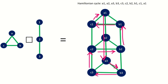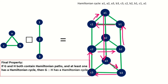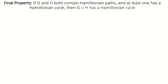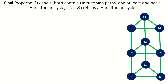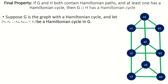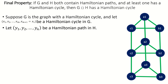This leads us to our final property: if we have two graphs with Hamiltonian paths where at least one also contains a Hamiltonian cycle, then their product contains a Hamiltonian cycle. We already know this is true when one of the graphs has an even number of vertices, so let's just consider the case when both graphs have an odd number of vertices. Since the Cartesian product is commutative, it doesn't make a difference which graph contains the Hamiltonian cycle. So let's suppose that g is our Hamiltonian graph, and that x sub 1, x sub 2, and so on up to x sub m, x sub m plus 1 equals x sub 1, is a Hamiltonian cycle in g, and y sub 1, y sub 2, and so on up to y sub n is a Hamiltonian path in h, where m and n are odd.